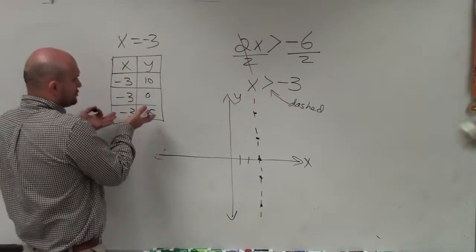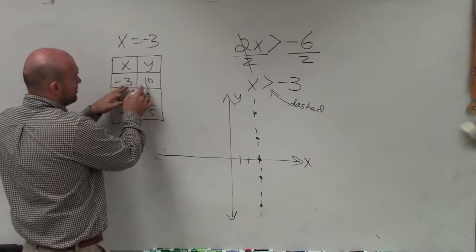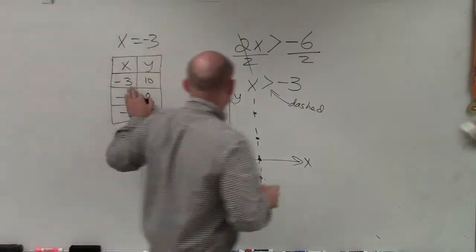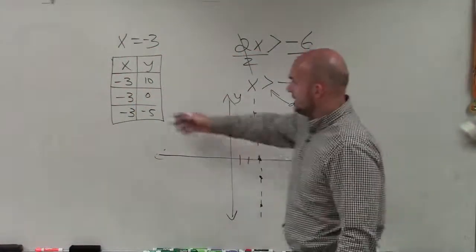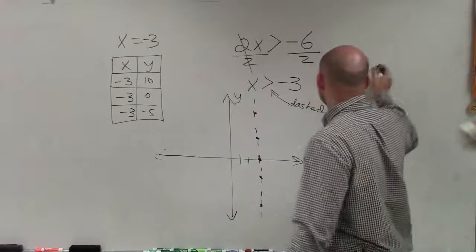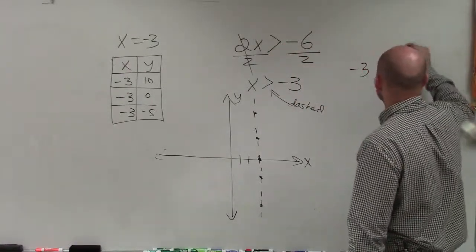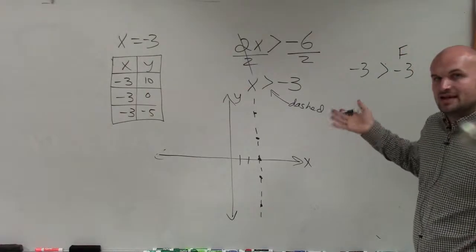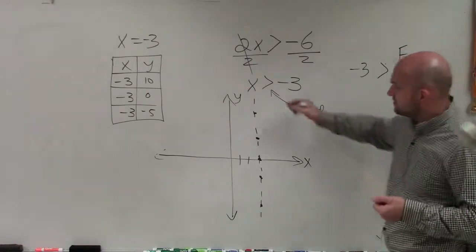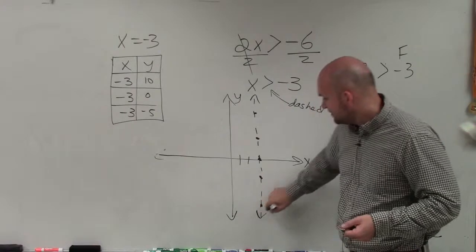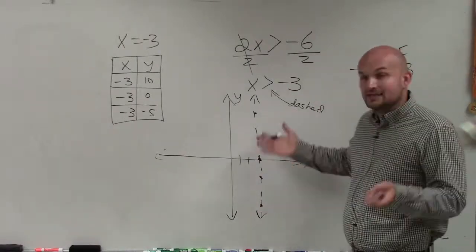So to prove that to you, I can plug in a coordinate point, and it will not be true. So let's plug in any coordinate point that I have. Remember, x is always equal to negative 3. So negative 3 is greater than negative 3, which is false. Because a negative 3 is equal to negative 3. So that's why this line is dashed. Because any point that lies on the line is not going to be true.